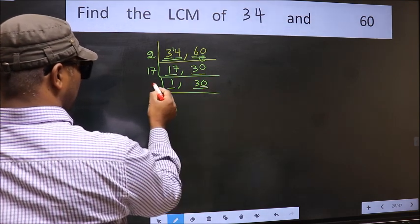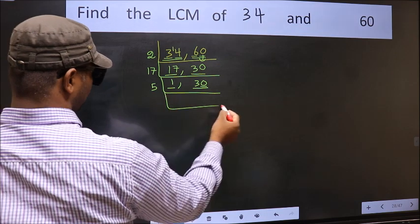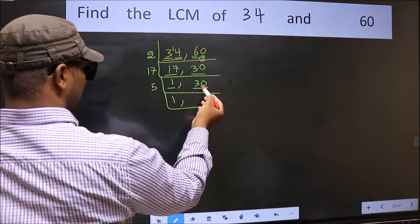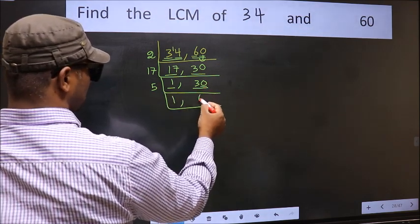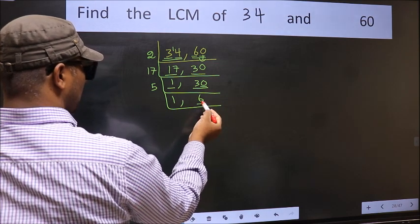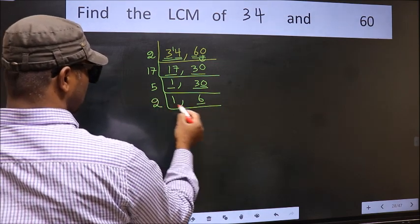Last digit 0, so directly take 5. When do we get 30 in the 5 table? 5 times 6 is 30. Now here we have 6. 6 is 2 times 3 is 6.